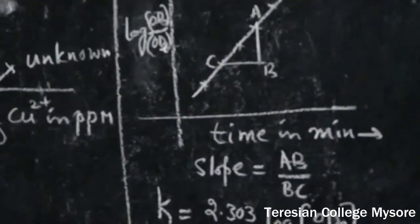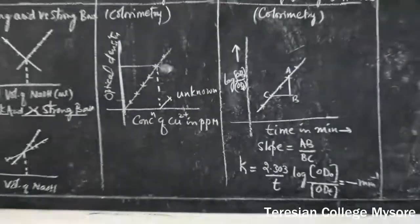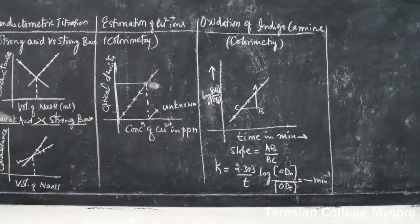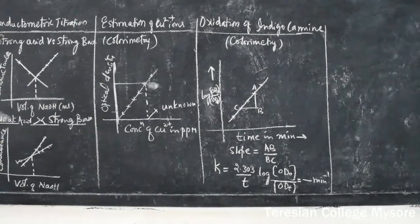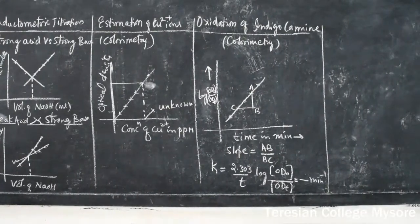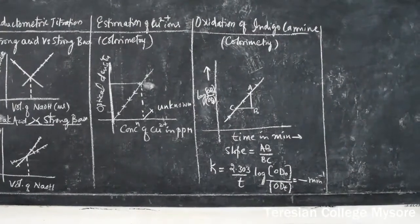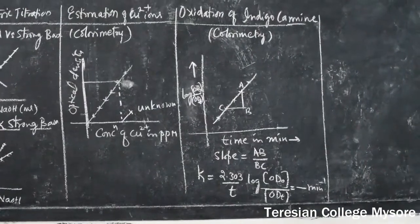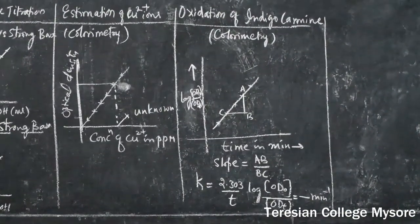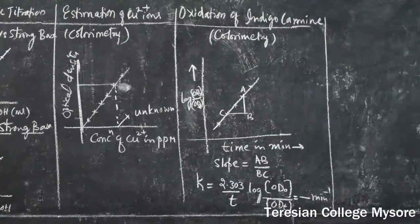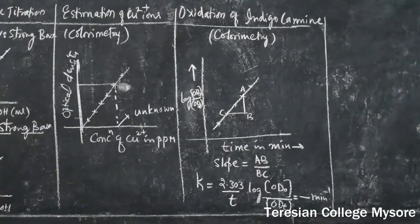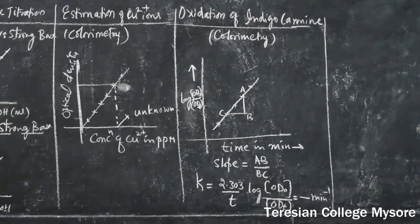For estimation of copper, after tabulating the results from the colorimeter, draw a graph of optical density versus concentration of copper in parts per million (PPM). You should get a straight line graph passing through the origin — that is a must, and the graph carries 5 marks. The graph should pass through the origin and cover the maximum number of points to get full marks.